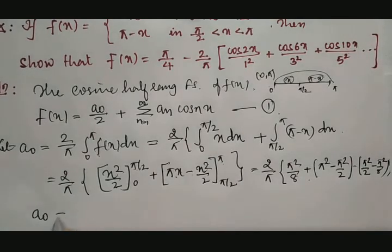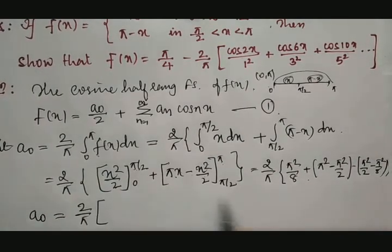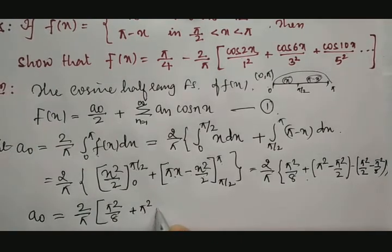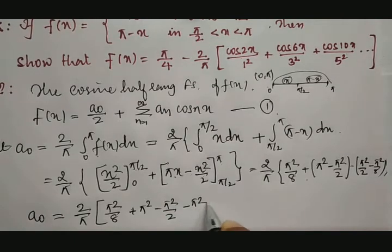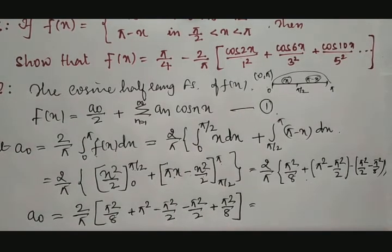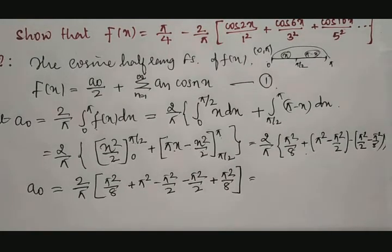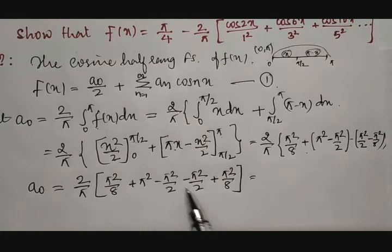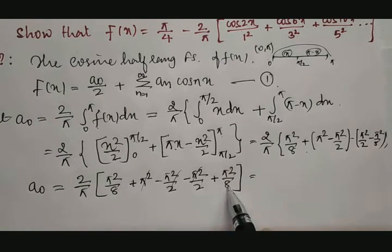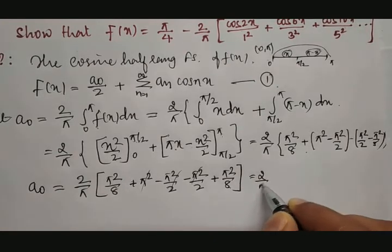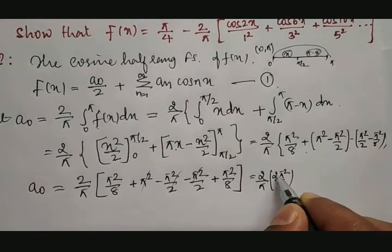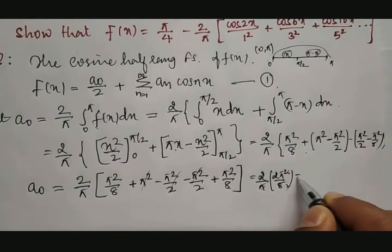A naught equals 2 divided by pi. Collecting terms: pi square by 8, plus pi square, minus pi square by 2, minus pi square by 2, plus pi square by 8. The minus pi square by 2 minus pi square by 2 gives minus pi square, which cancels with plus pi square. Then pi square by 8 plus pi square by 8 is 2 times pi square by 8, and simplifying: 2 into 2 divided by pi gives pi by 2. So A naught equals pi by 2, and A naught by 2 equals pi by 4.